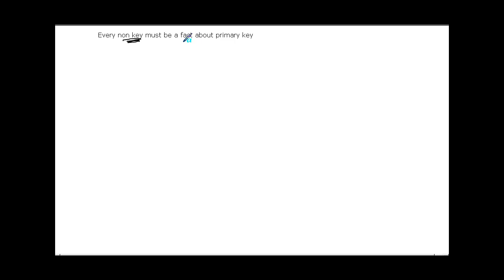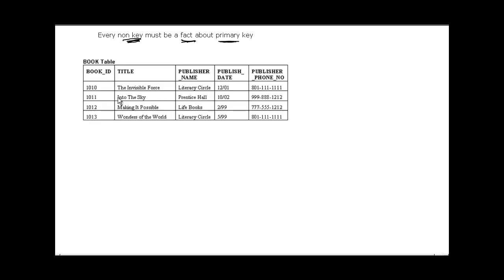The last one is the third normal form. The third normal form goes a little beyond the second normal form — it says that all non-key columns must be a fact about the primary key, not just depend on it but actually be a fact about it. We have a book table with book ID, book name, publisher name, publisher dates, and publisher phone number. The primary key is book ID. Publisher phone number does not tell any fact about the primary key, which is book ID, so it must be removed to another table.